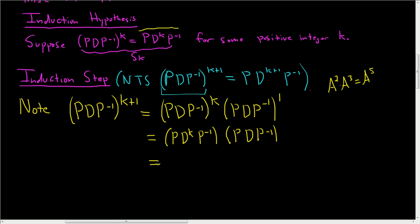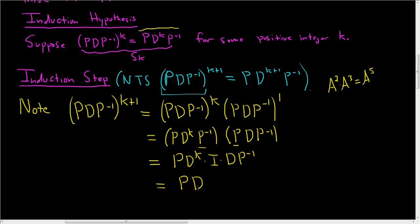Matrix multiplication is associative, so we can drop the parentheses, and P⁻¹ times P is the identity matrix I. So this becomes PD^k times I times DP⁻¹.